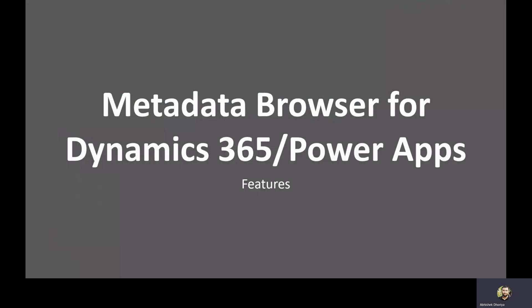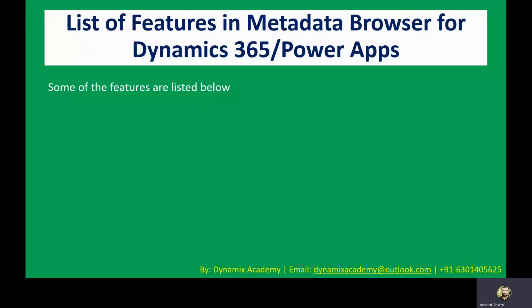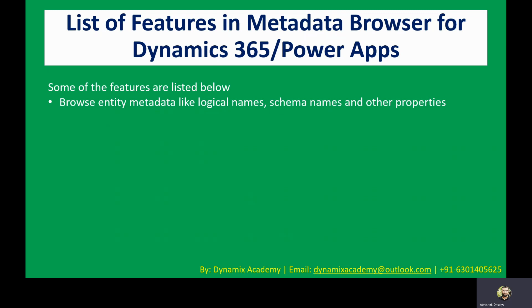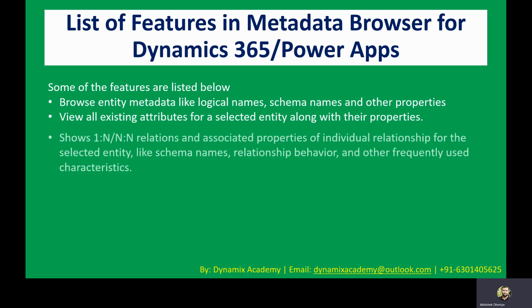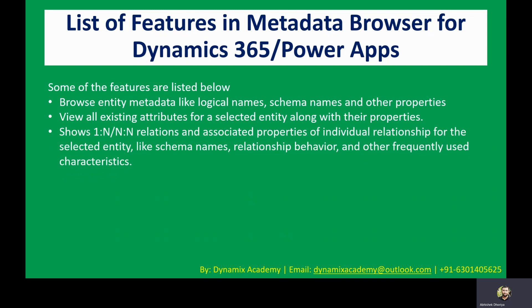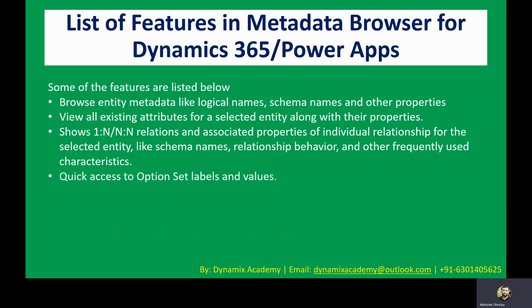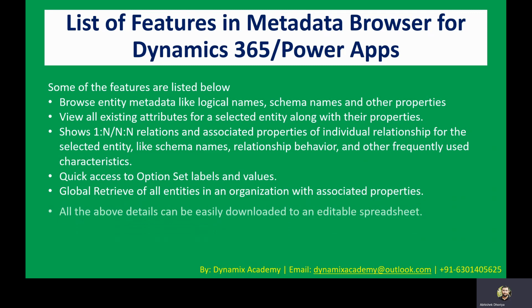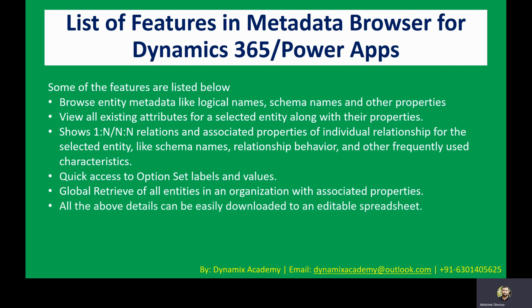Let us now see the list of features available in Metadata Browser for Dynamics 365 or Power Apps. You can browse entity metadata like logical names, schema names, and other properties. You can view all existing attributes for a selected entity along with their properties. It shows one-to-many and many-to-one relationships and associated properties such as schema names, relationship behavior, and other frequently used characteristics. You also get quick access to option set labels and values, as well as a global retrieval of all entities in an organization with associated properties.